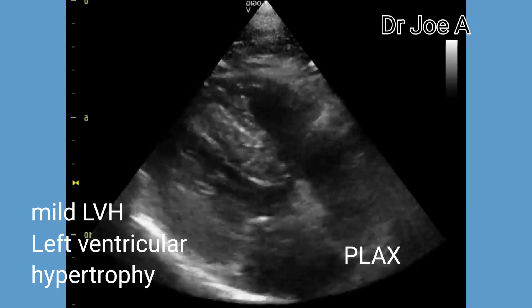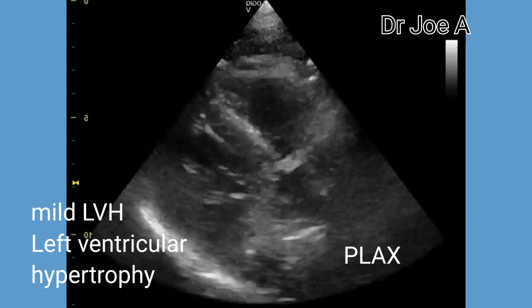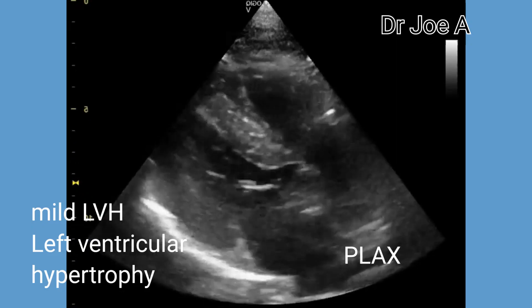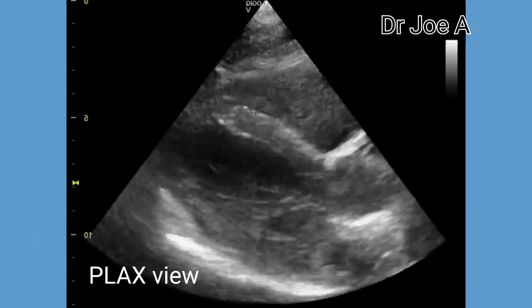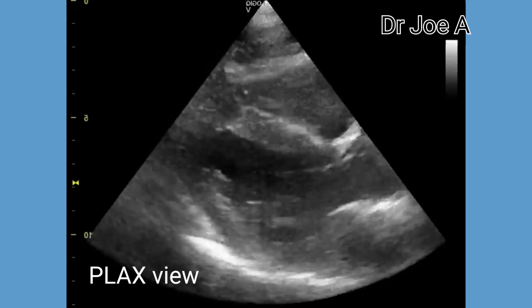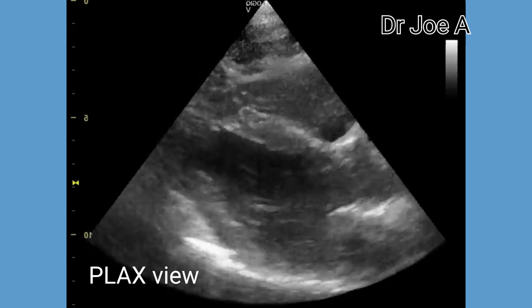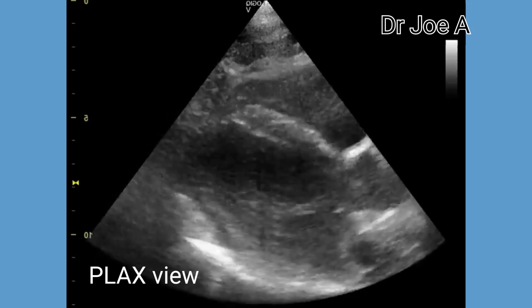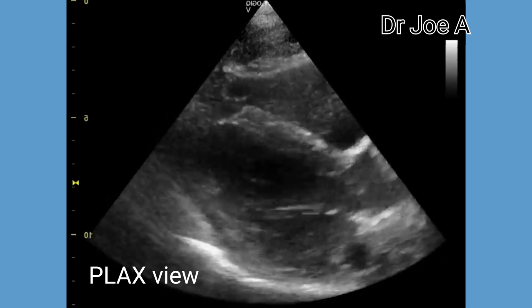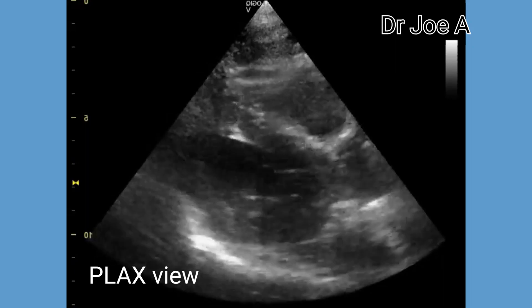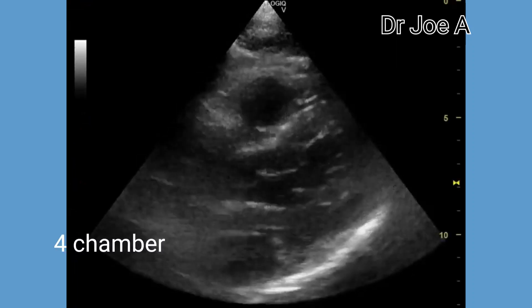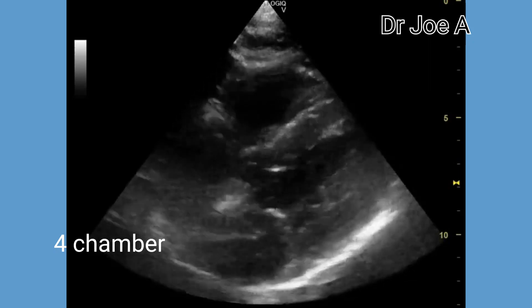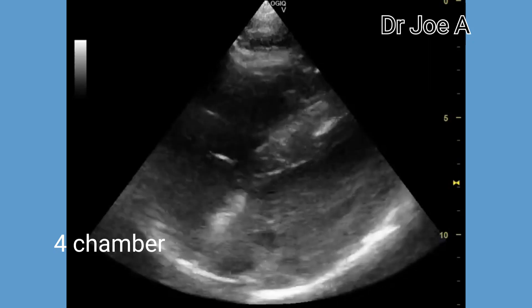A thickness of the interventricular septum of 12 to 13 millimeters is considered mild left ventricular hypertrophy. 14 to 17 millimeters thickness is considered moderate LVH. A thickness of more than 17 millimeters is considered severe LVH. A thickness of more than 1.1 centimeters or 11 mm is considered left ventricular hypertrophy.